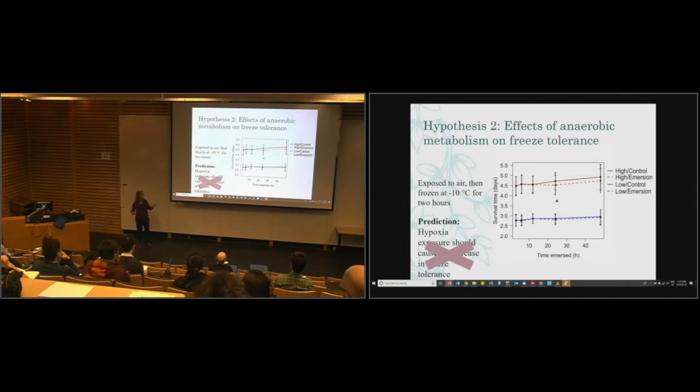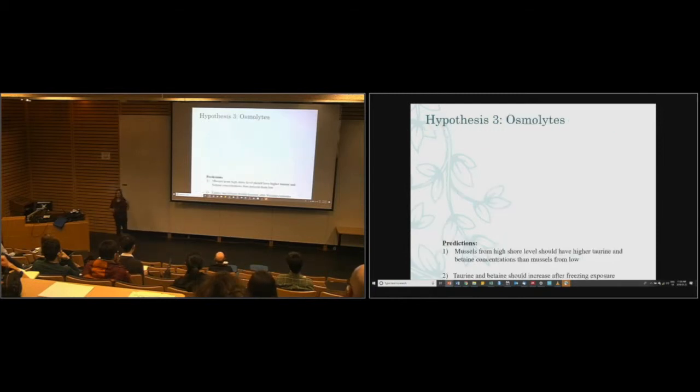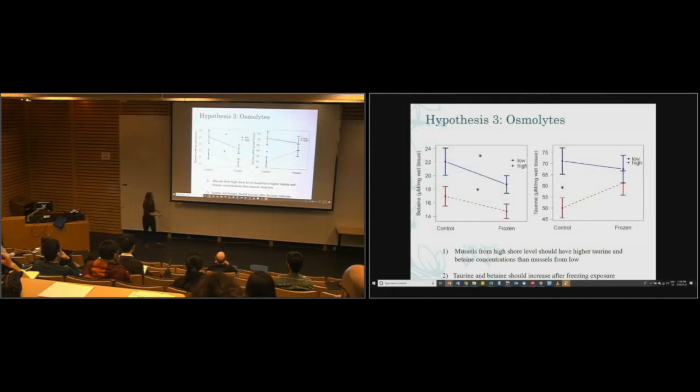That was literally everything that everyone in the literature had said for marine bivalves. This is what should actually cause freeze tolerance in marine bivalves, and no. As you can imagine, as a post-doc, I'm like, no. I've got one more hypothesis. Maybe the organic osmolytes. What did I find? I expected mussels from the high shore level should have higher taurine and betaine than mussels from the low, and maybe it should increase after freezing exposure. What did I get? The opposite. And this kind of makes sense. Mussels from the low shore position probably are in seawater more of the time, so it kind of makes sense to me that they would have more of these osmolytes. And if anything, after freezing, we actually saw a bit of a decrease. So just no, like, no on all three counts.